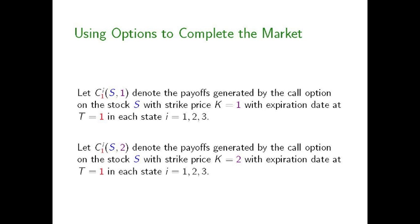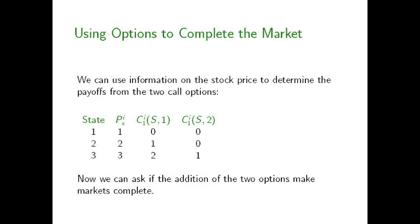Here is some notation we can use to keep track of the payoffs generated by these two call options. The S refers to the fact that these are options on the stock. The purple one and two inside parentheses make reference to whether we're talking about the call option with strike price K equals one or K equals two. The red subscript one indicates these are both options with expiration date T equals one. And the i superscripts allow us to keep track of the payoffs the options make in each of the three possible states of the world at the expiration date, at time one.